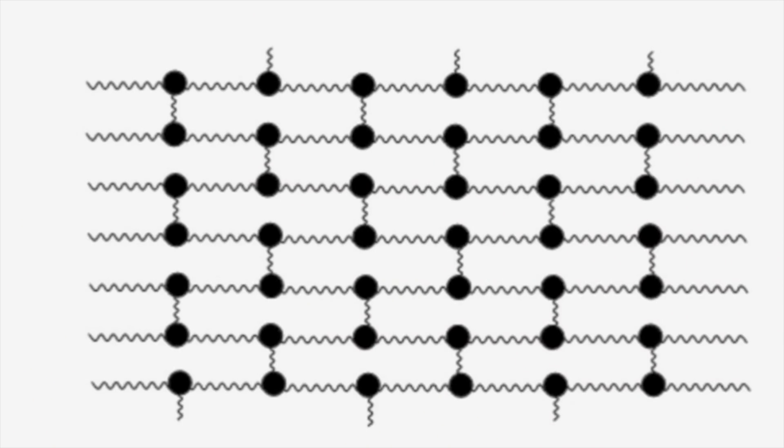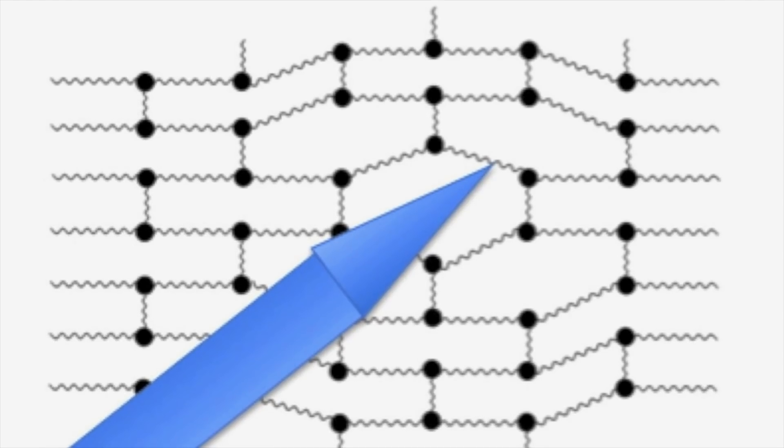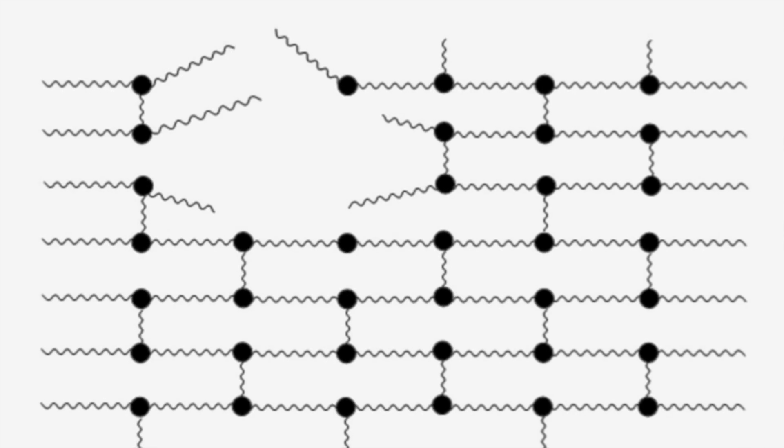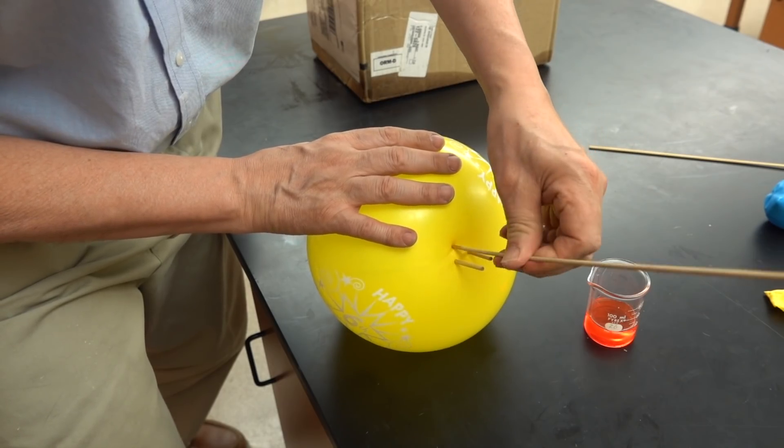These materials are polymers. They're made of long chains of molecules that are able to stretch and get pushed aside as that dowel goes through them. But if we try and stretch them too much, they will break. If you're careful, you can actually push two or three skewers through the same balloon.